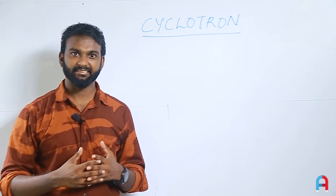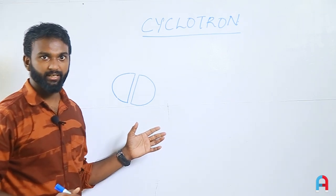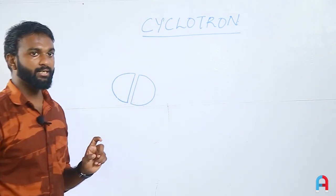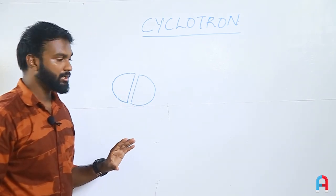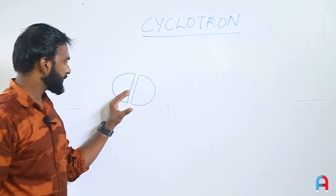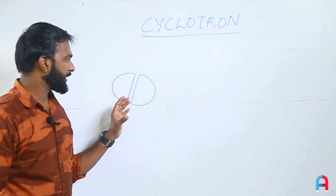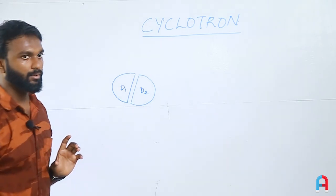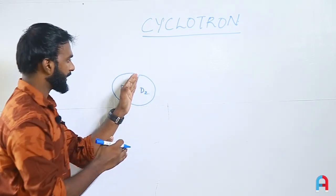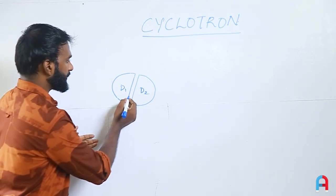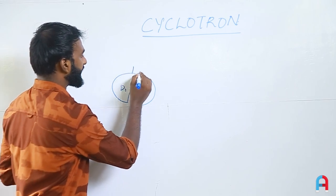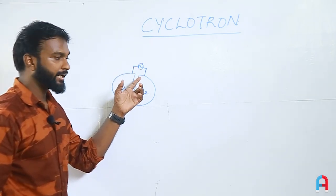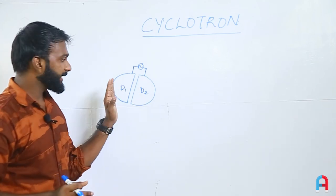We are going to discuss the construction of the cyclotron. There are two D-shaped parts — D1 and D2. These are two hollow semi-circular shaped metal boxes. The hollow structure is very important for the working. These two metallic D's are connected to an AC oscillator, and D1 and D2 are perfectly insulated from each other.